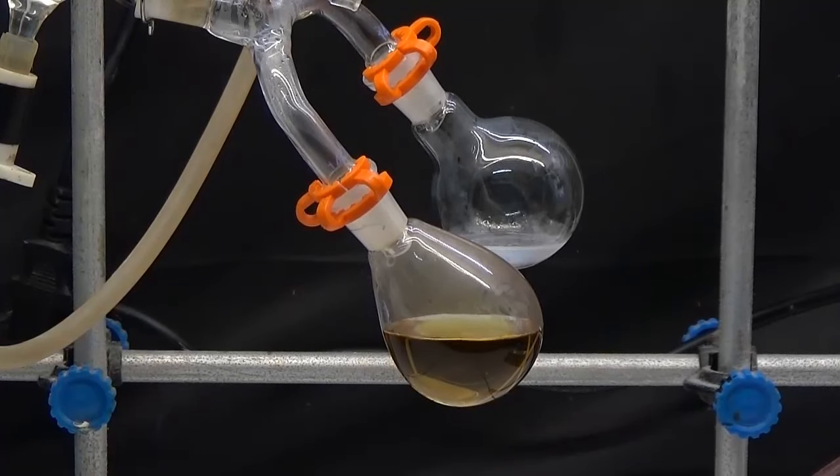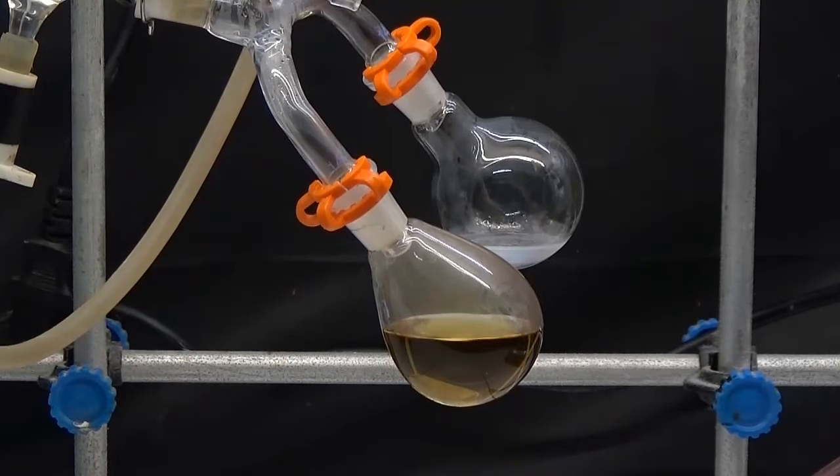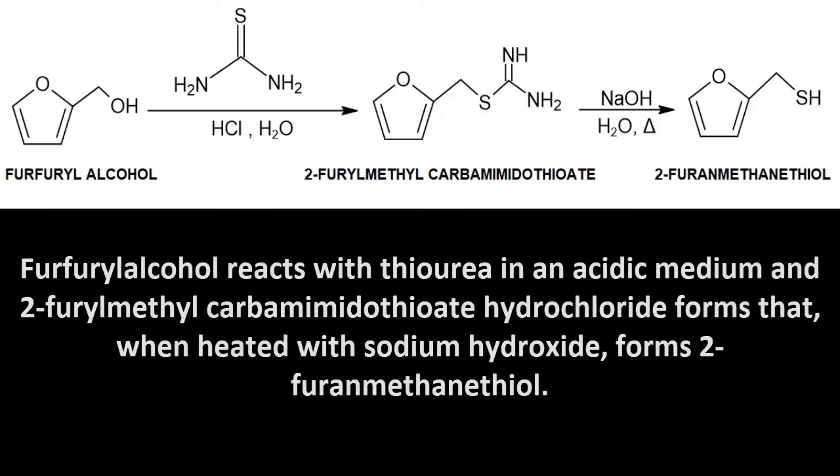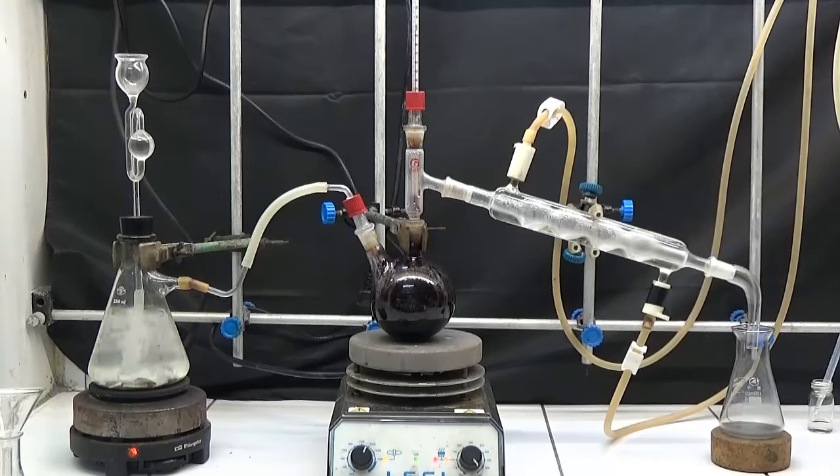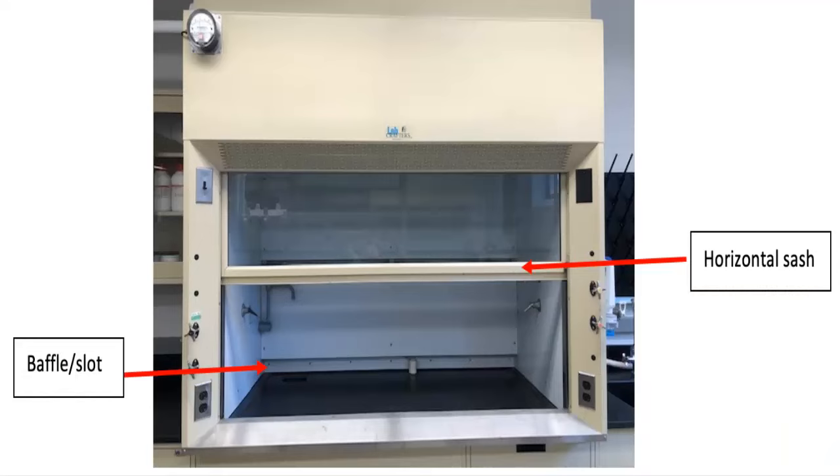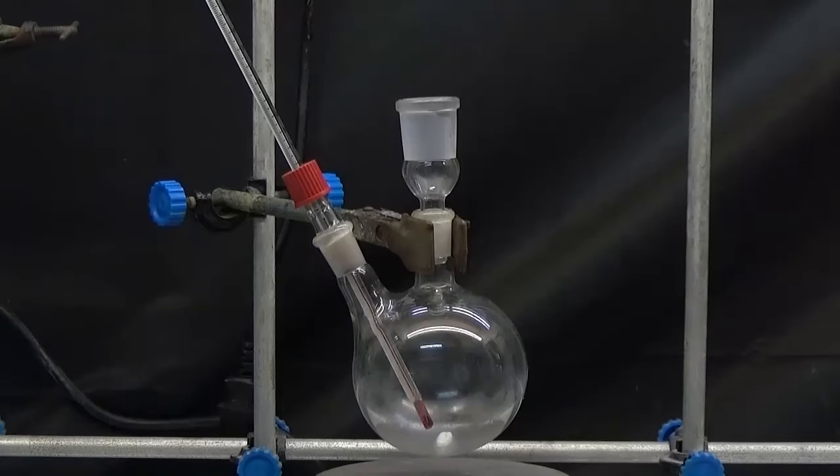Once we get the furfuryl alcohol, we'll do the synthesis of 2-furan methanethiol. To obtain 2-furan methanethiol, furfuryl alcohol reacts with thiourea in an acidic medium and 2-furfuryl carbamidothioate hydrochloride forms. When heated with sodium hydroxide, it forms 2-furan methanethiol. 2-furan methanethiol is separated by steam distillation. It is very important to work in a fume hood or outdoors. 2-furan methanethiol has an unpleasant smell and causes severe headaches.